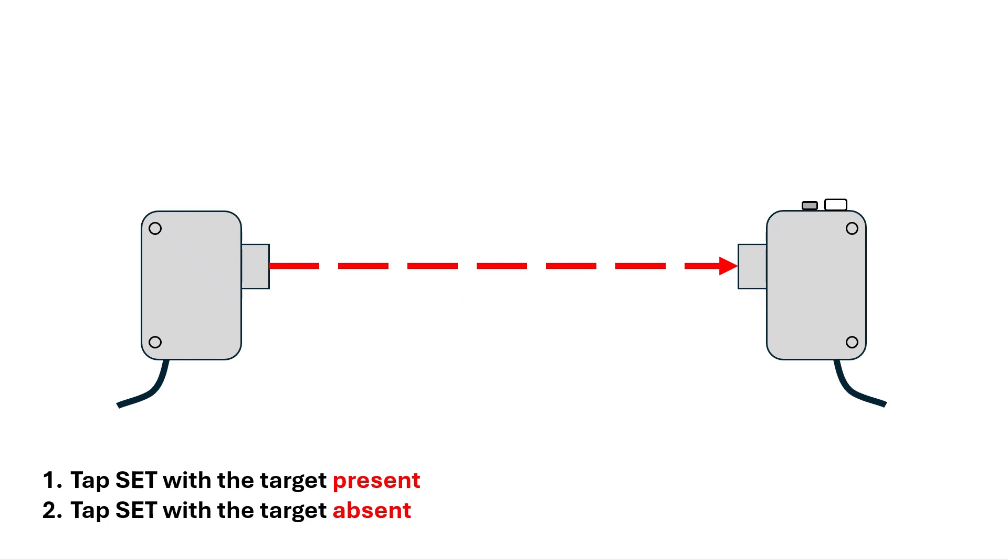To perform a two-point calibration, tap the set button once with the target present and once with the target absent. When we tap the set button with the target present here, the live value is zero. The sensor will internally note that the set button was pressed at this live value of zero.